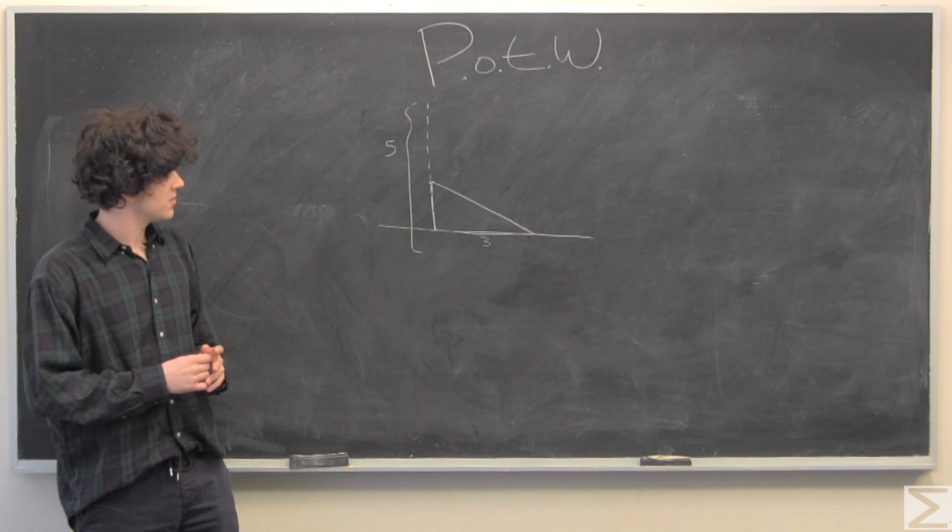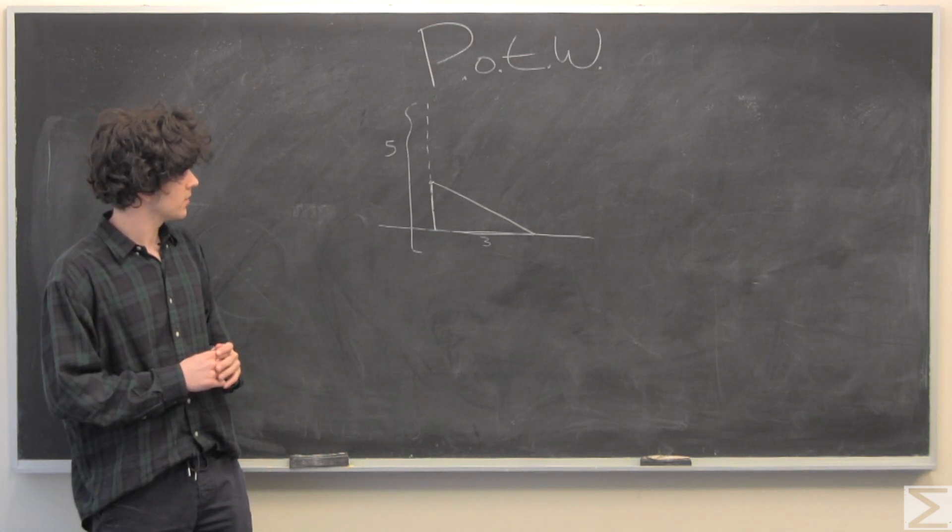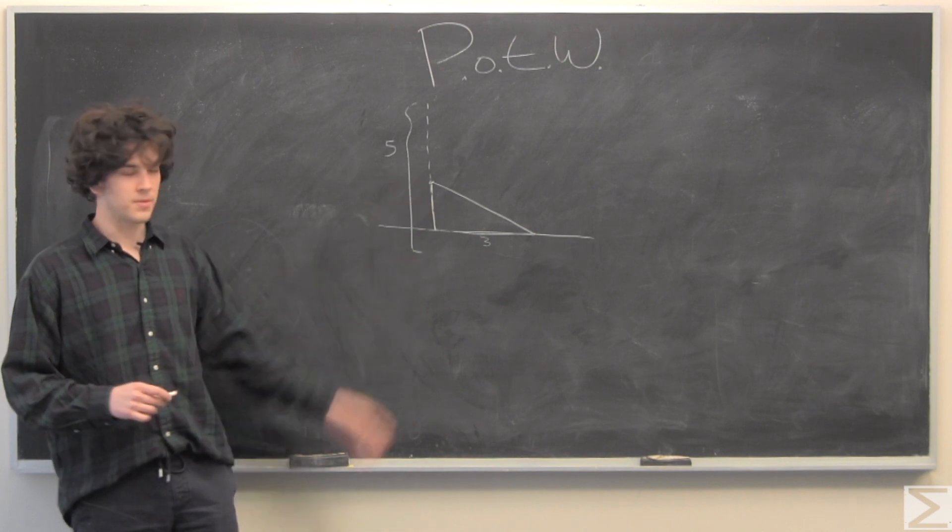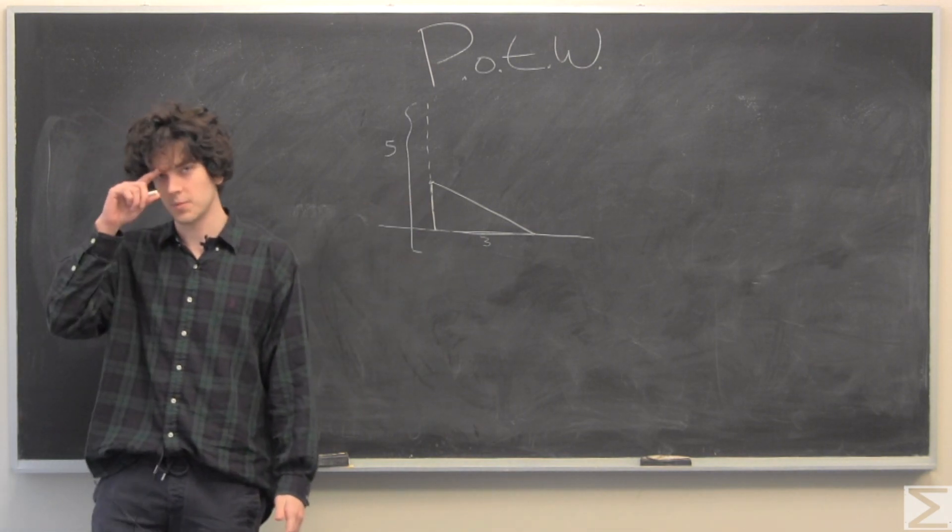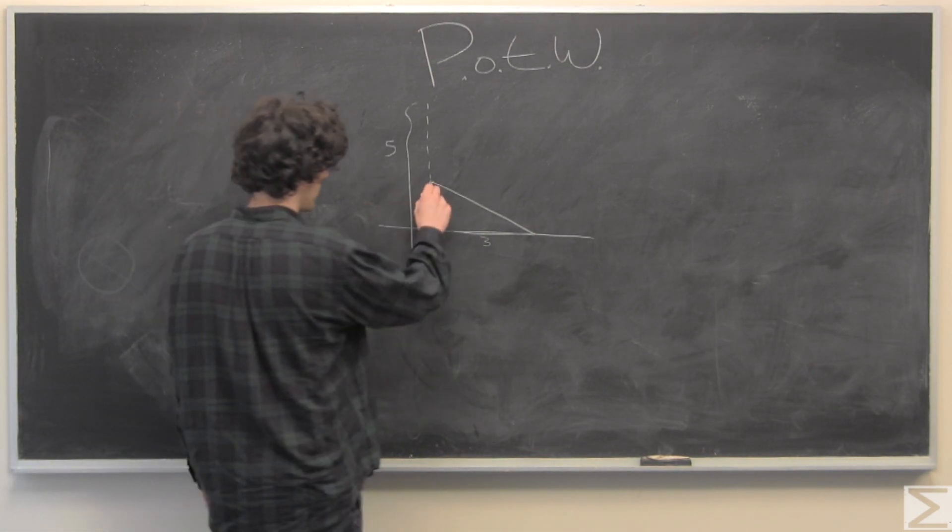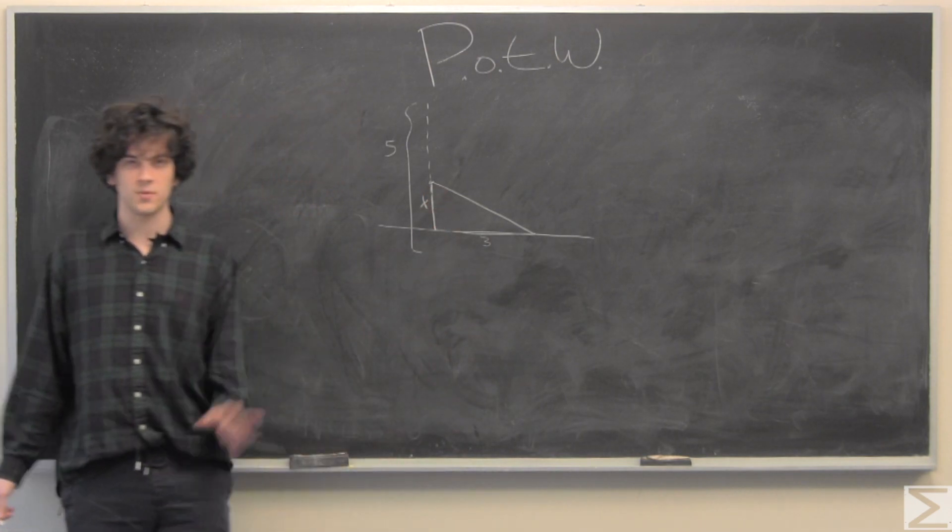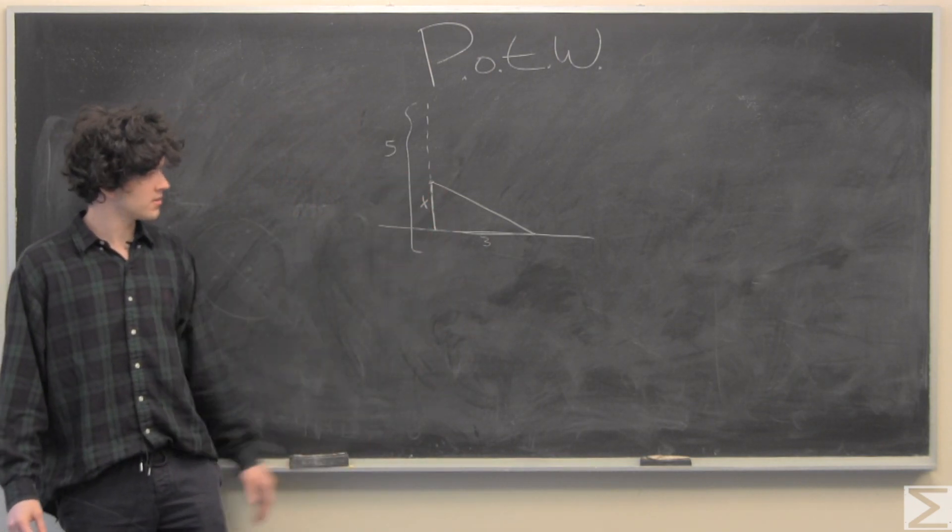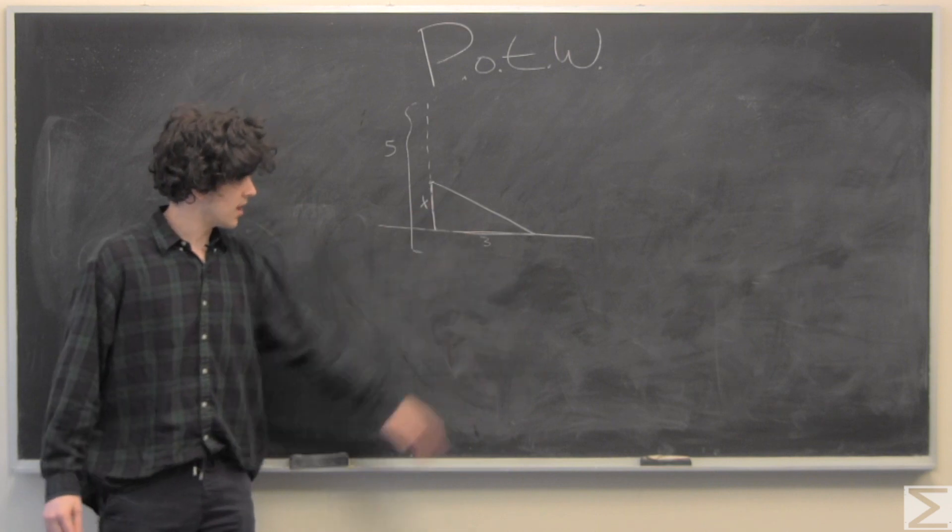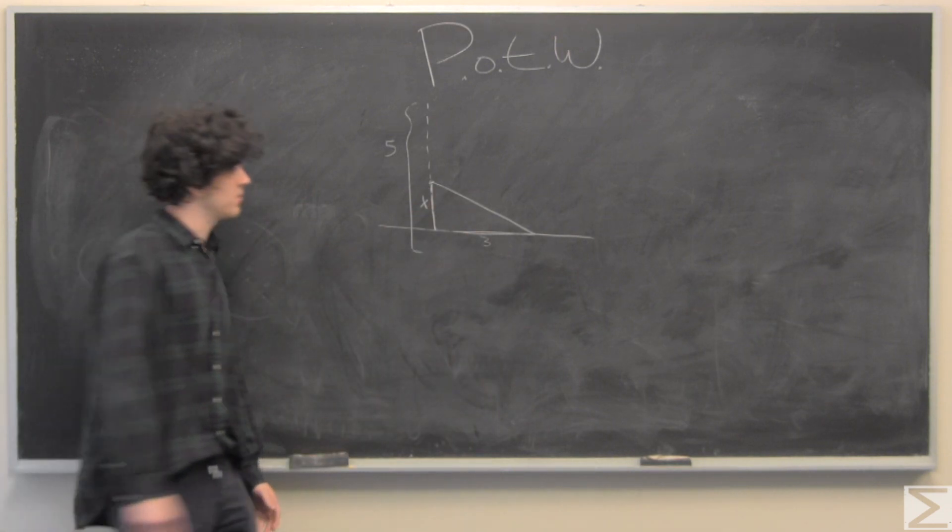And we also want to find out how far from the ground the pole snapped. So, since we're solving for that, we'll call this length x, and this is the hypotenuse, so it would be useful to know that. We'll call that c.